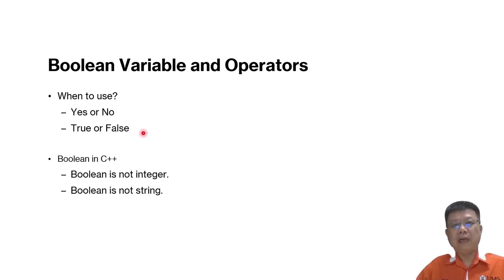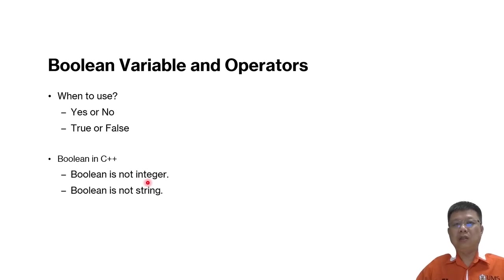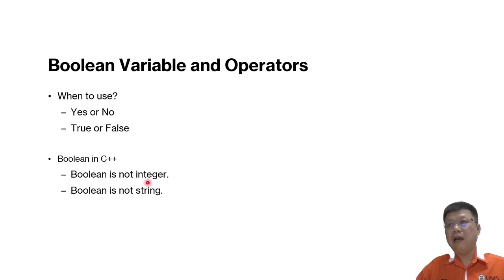You have to understand that in C++, boolean is not considered an integer and also not a string. It is not one or zero — it is true or false.